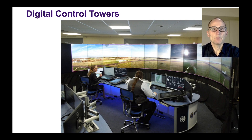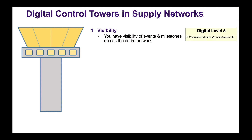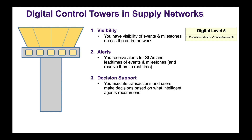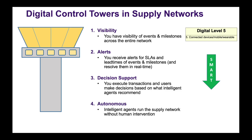This concept can also be applied to the supply chain. A digital control tower of your supply chain gives you visibility of all events and milestones across the entire network. You can add simple control algorithms that send alerts whenever you're about to miss a service level agreement. Operators can resolve these issues in real time. Moving further, more sophisticated algorithms provide decision support to agents who make decisions based on what these intelligent algorithms recommend — we call that smart decision making. And fourth, intelligent agents, the algorithms, run the supply network decisions without any human intervention, which we refer to as autonomous automation.